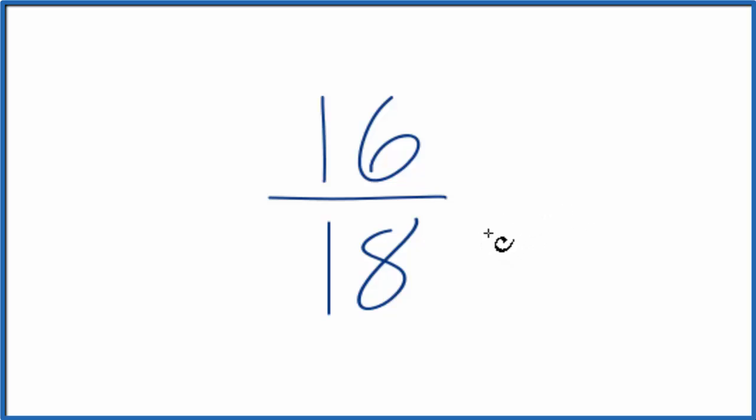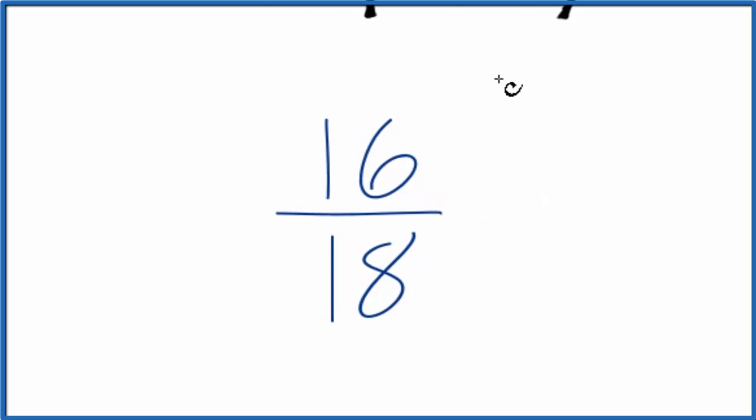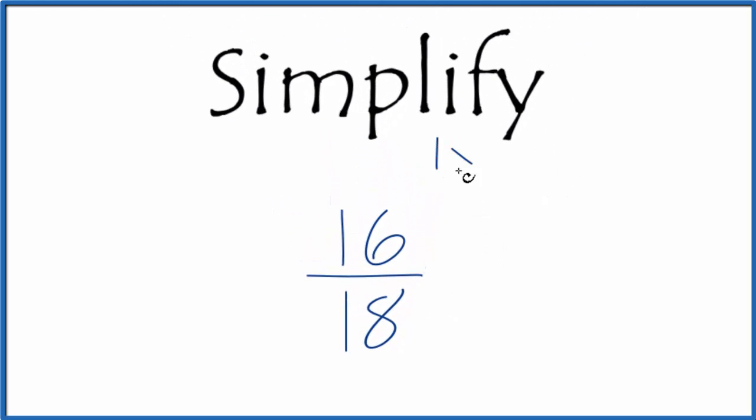We need to find the greatest common factor for 16 and 18. To do that, let's list the factors of 16: 1 times 16, 2 times 8, and 4 times 4. And then for 18 we'd have 1 times 18, 2 times 9, 3 times 6, and that's about it.